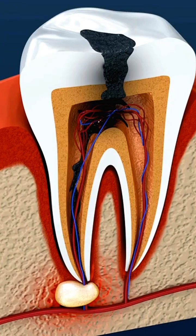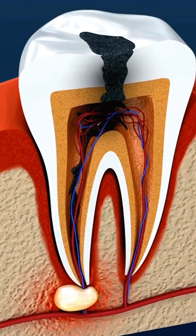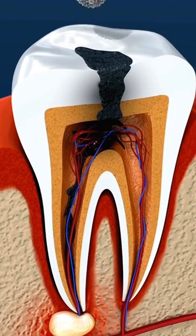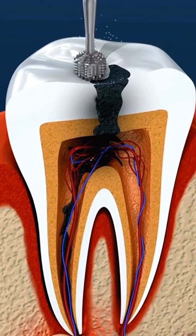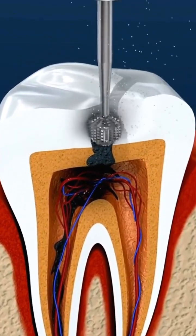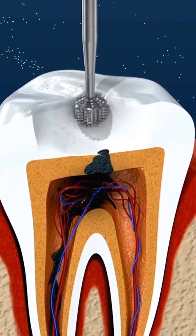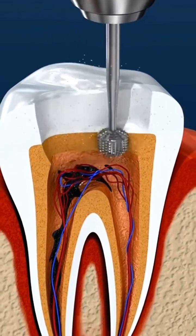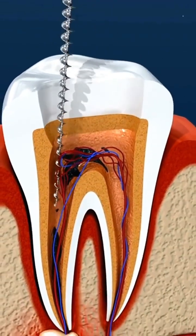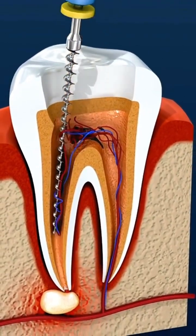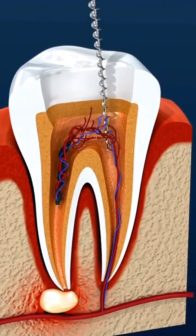Tooth deterioration is another cause. What happens during a traditional root canal procedure? The dentist or endodontist removes the tooth pulp to treat the infection inside the tooth. Before beginning treatment, x-rays are taken, the patient is given local anesthetic, and a dental dam is placed.